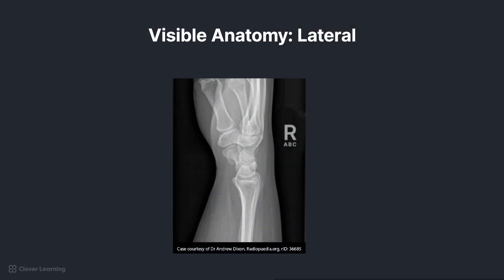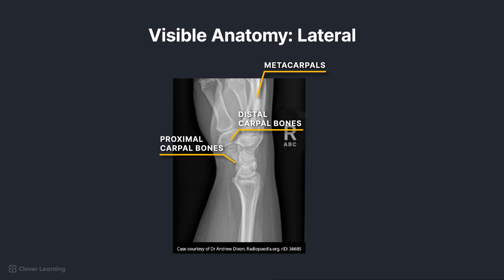Like the hand, wrist anatomy can be most difficult to distinguish in the lateral projection. Working from the most distal to the most proximal anatomy, we again have the proximal metacarpals with two through four superimposed, superimposed distal and proximal rows of carpal bones, as well as the superimposed distal radius and ulna.